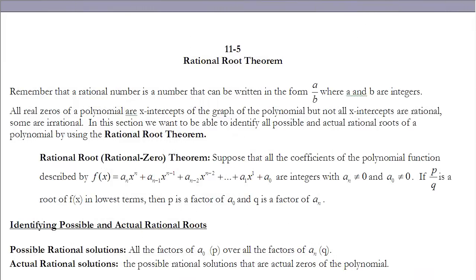This is the notes for section 11.5 Rational Root Theorem. If you haven't done so already, make sure you read the section before continuing on with these notes. First of all, we need to be reminded when we talk about a rational number. A rational number is any number that can be written a over b, where a and b are integers, or whole numbers, positive or negative.